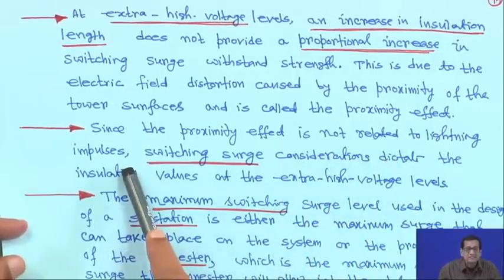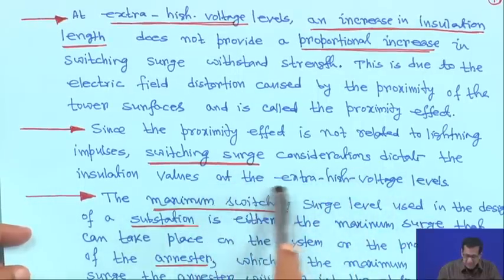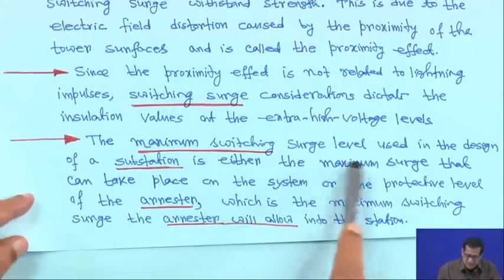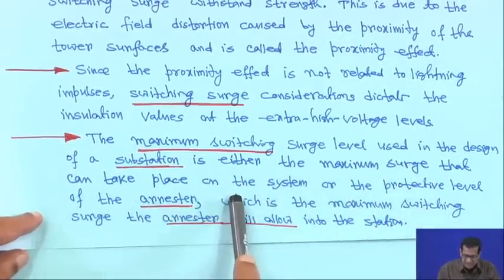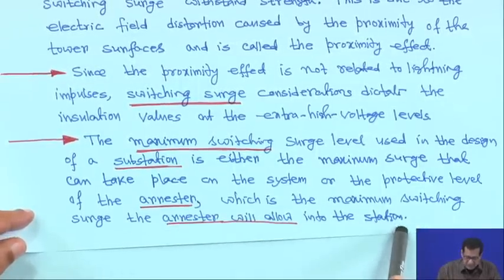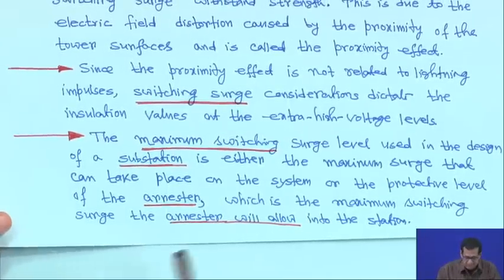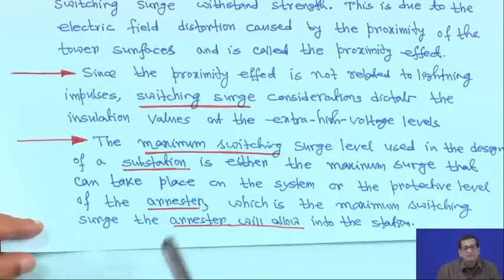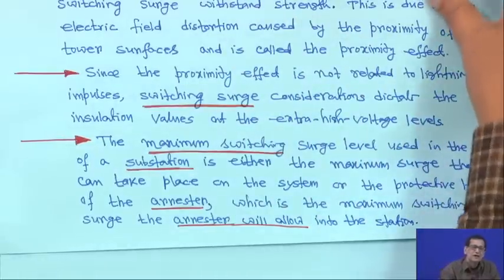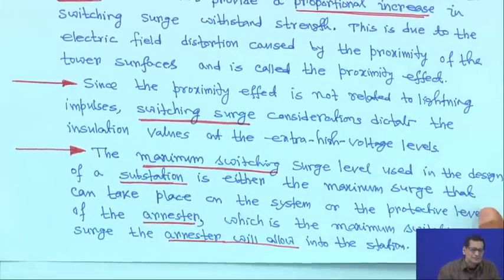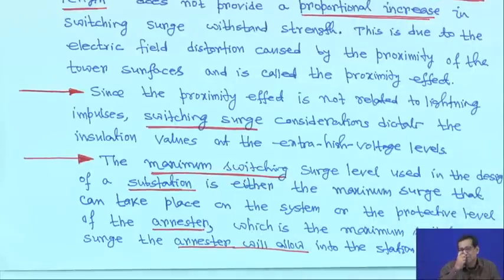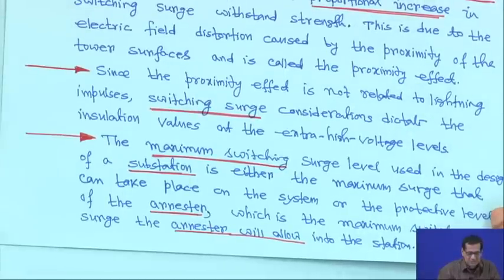The maximum switching surge level used in designing a substation is either the maximum surge that can occur on the system or the protective level of the arrestor — that is, the maximum switching surge the arrestor will allow into the station. Even arrestors can fail due to heavy lightning strokes; such arrestor failure can cause damage to other equipment in the substation.